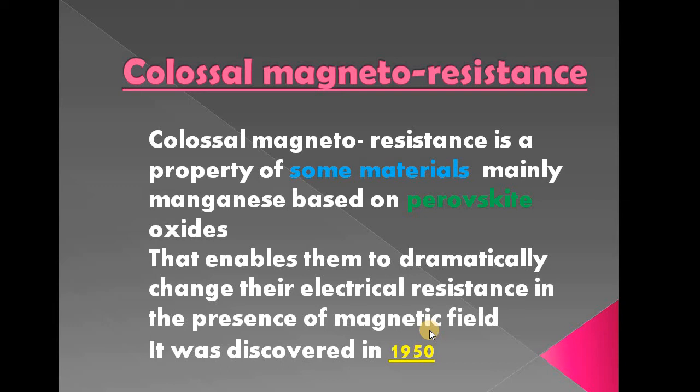There is a dramatic change in electrical resistance due to the magnetic field. When that change is a decrease in resistance, that is called negative magnetoresistance, and that is the principle involved in colossal magnetoresistance.